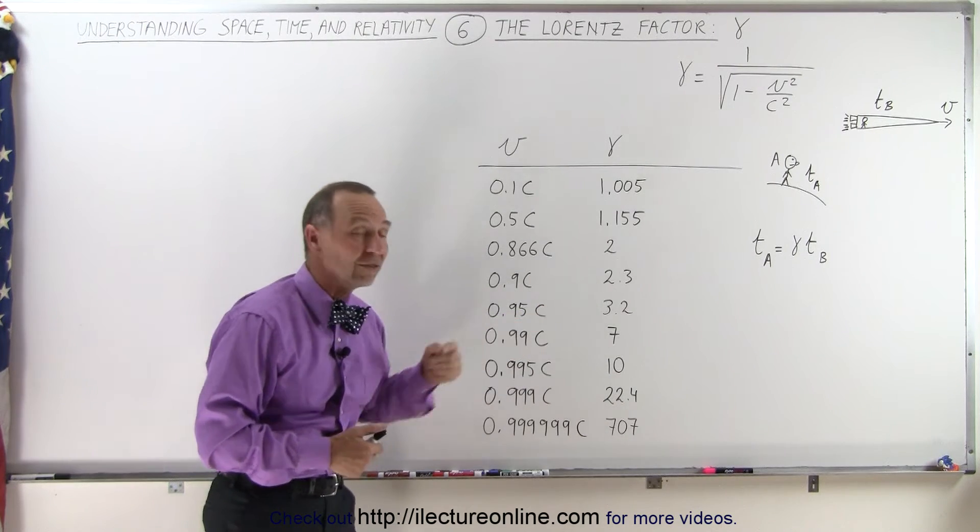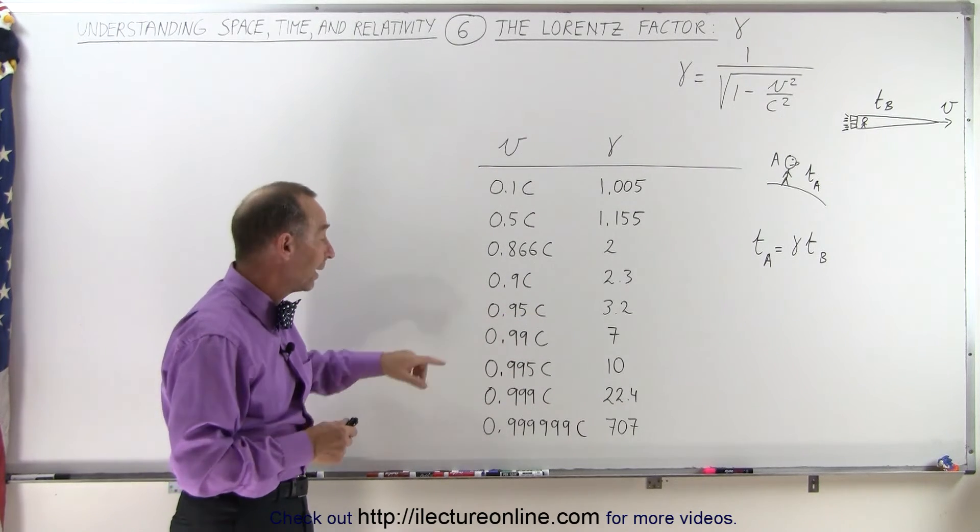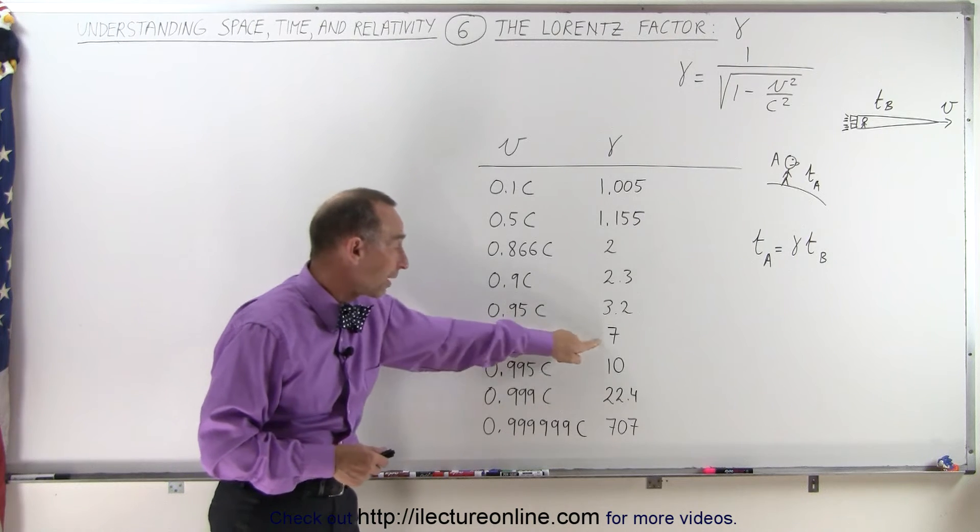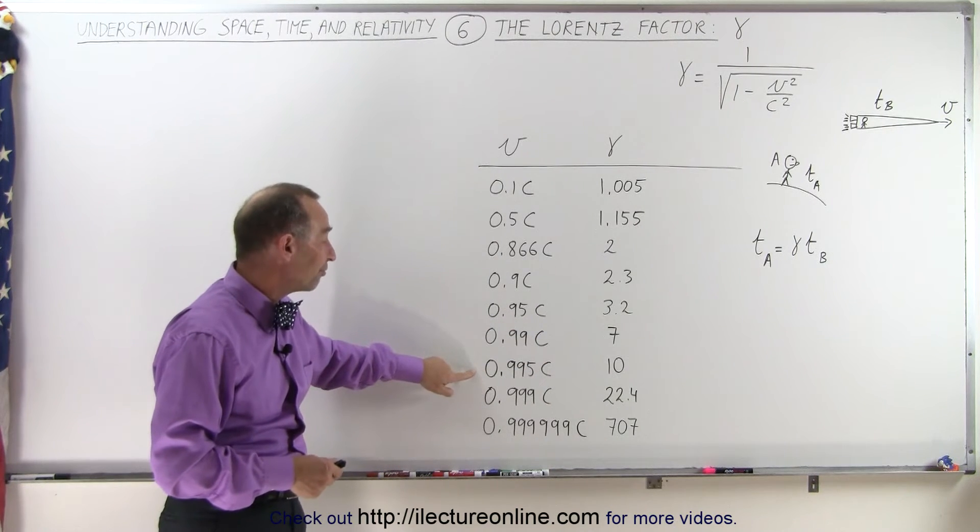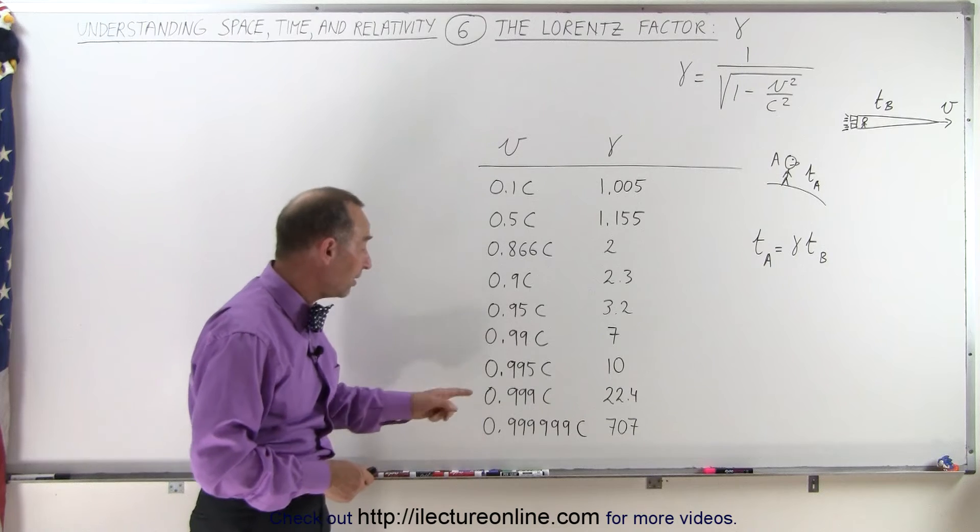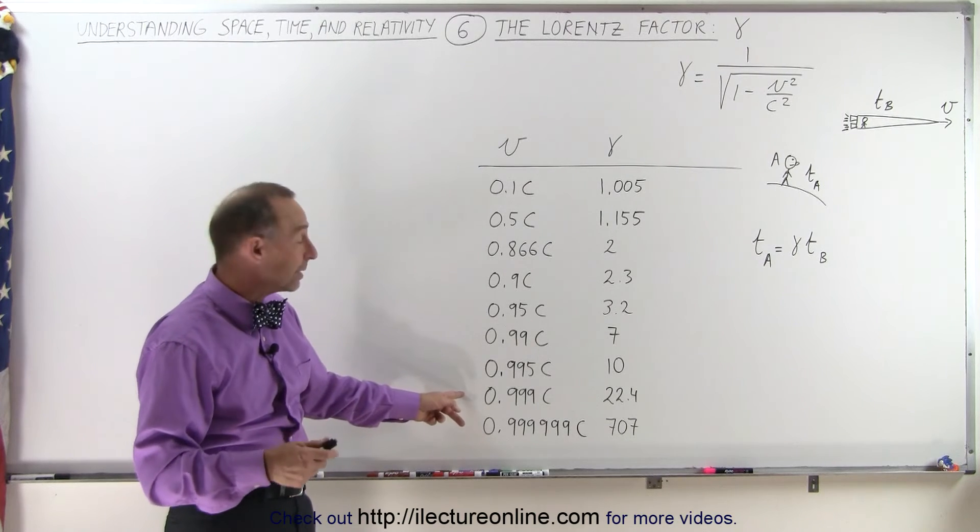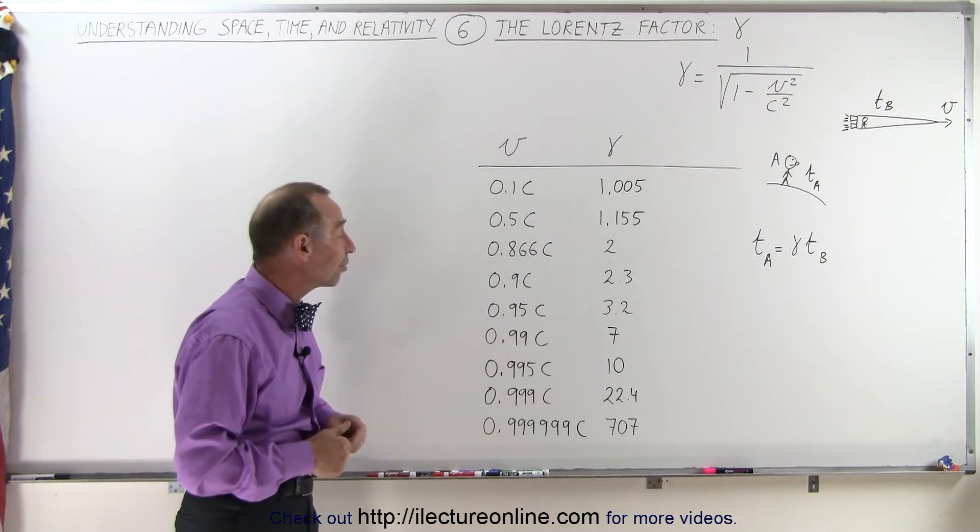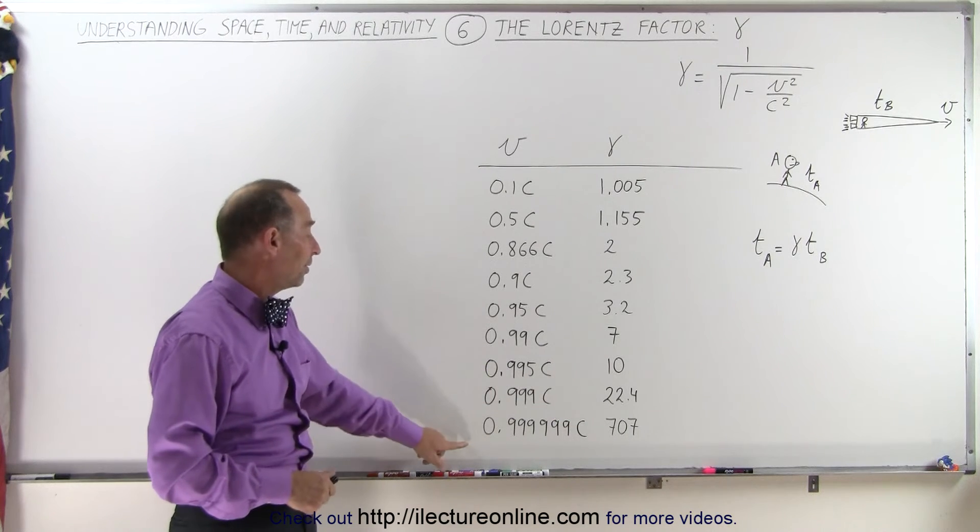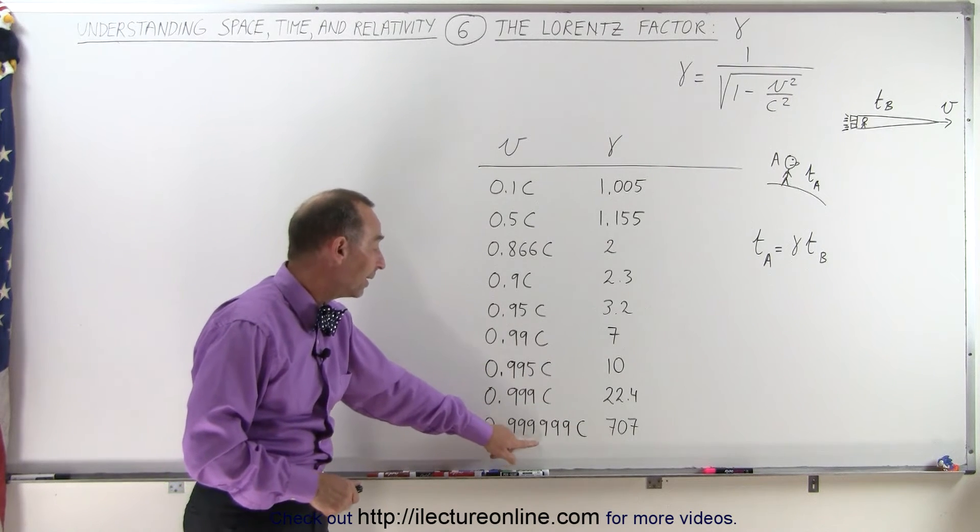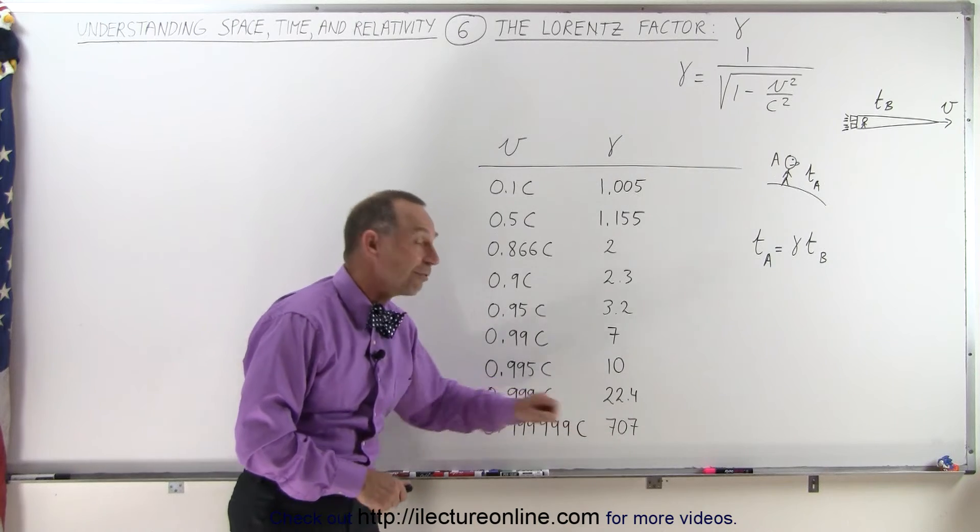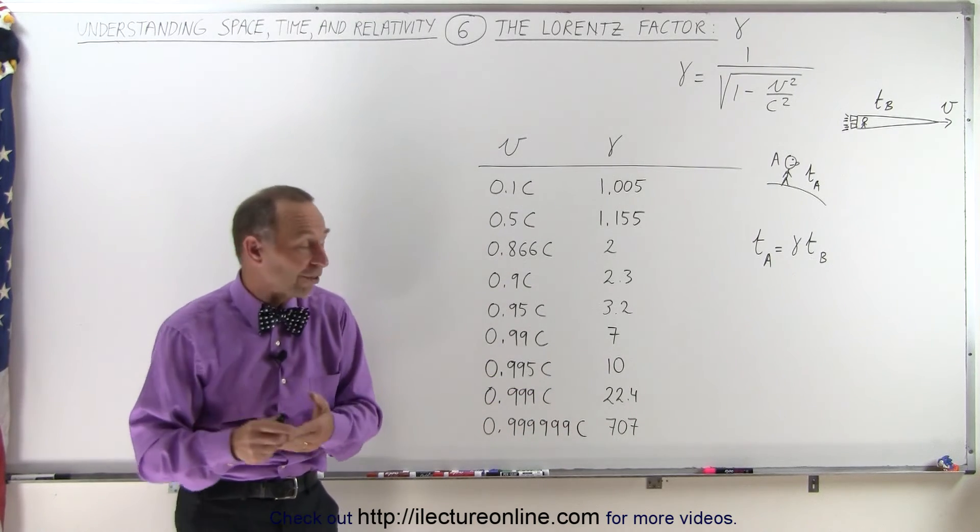you can see that the factor begins to increase quite quickly. At 99% of the speed of light, the factor is 7. At 99.5%, the factor is 10. At 0.999 times the speed of light, it's 22.4. And at 0.999999C, the factor is now 707.